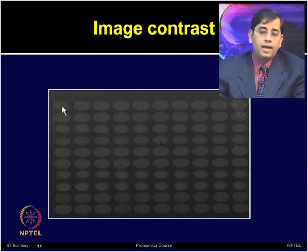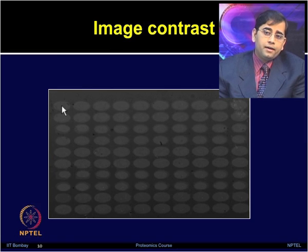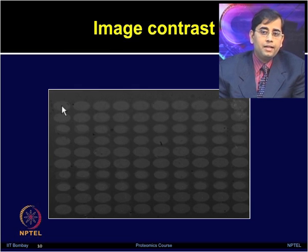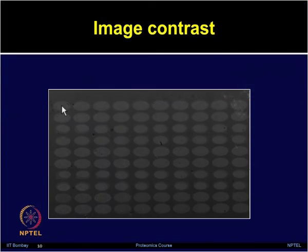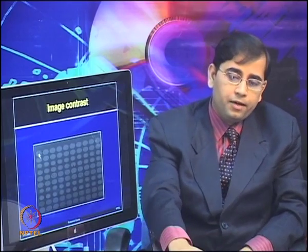From the SPR image, as the term SPRI implies, an image is generated showing image contrast. In SPRI, a collimated monochromatic beam of light is used to illuminate the sample assembly at a single incident angle near the SPR angle, and the reflected light is detected by a charge coupled device camera which produces the SPR image. Each circle shown represents a spot printed on the gold surface.